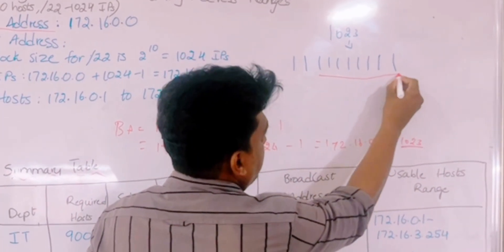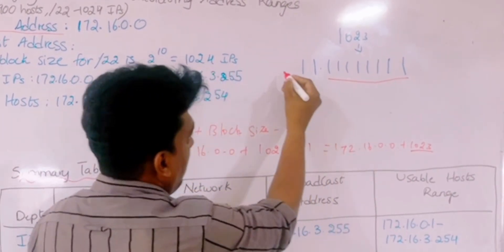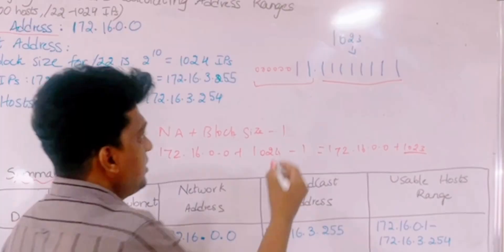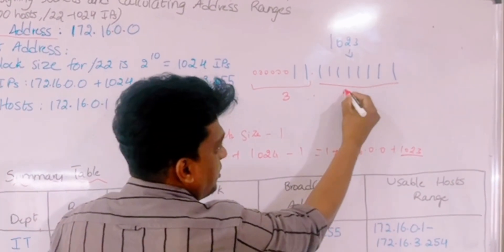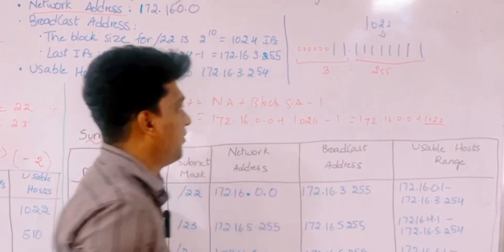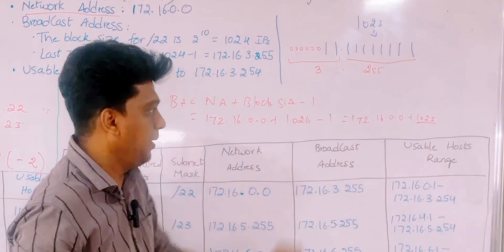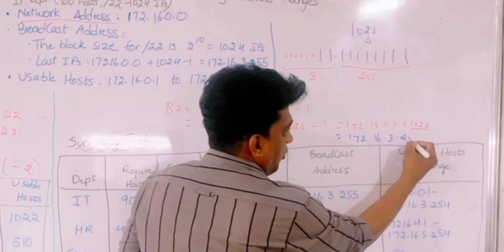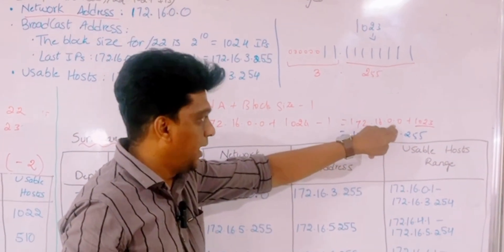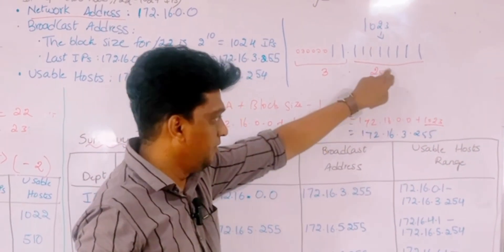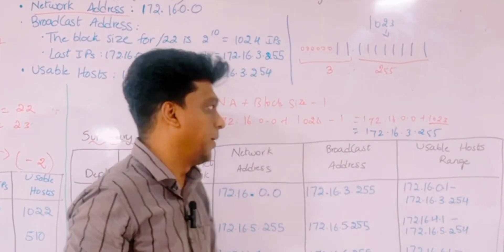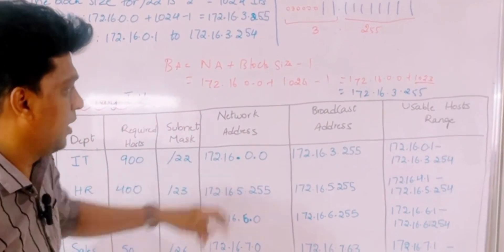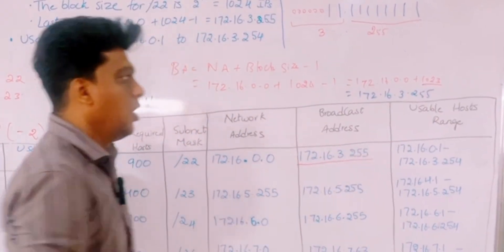When we align the 10-bit binary of 1023 across the last two octets — placing 6 zeros before the binary — and convert, the third octet becomes 3 and the fourth becomes 255. Adding this to the network address gives the broadcast address: 172.16.3.255.